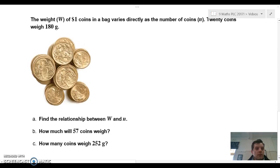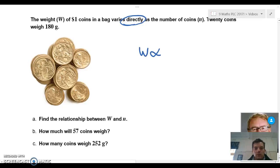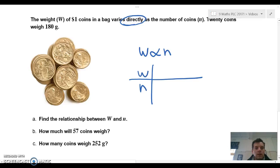So in this example, we're told that the weight of one dollar coins in a bag varies directly, so we can say that it's proportional. 20 coins weigh 180 grams. So our variables are w is directly proportional to n. What we're going to do here to make this one easier is just draw up a table with w and n. So when we have 20 coins for n, the weight is 180.